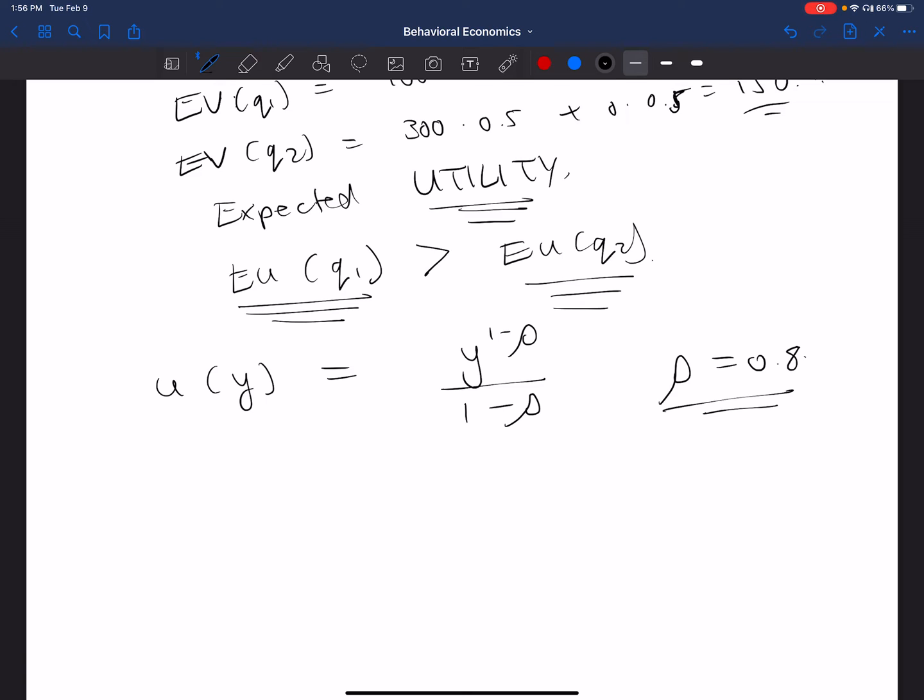So what is happening here? Well, if we substitute rho in here, what do we have? We've got y to the 0.2 divided by 0.2. So that will be our utility function in this context.